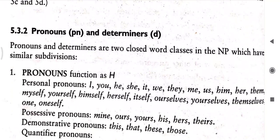Pronouns and determiners are closed class words in the noun phrase. Pronouns function as head. Personal pronouns are used for nouns, so they may be labeled as head. Possessive pronouns include: mine, yours, ours, his, hers, theirs. Demonstrative pronouns are: this, that, these, those. Quantifiers are also used as head: all, some, any, none, one, another, each, both.